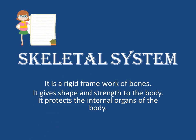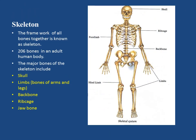What is the skeletal system? The skeletal system is a rigid framework of bones. It gives shape and strength to the body. It is a body cage that protects the internal organs of the body. What is a skeleton? The framework of all bones together is known as skeleton.